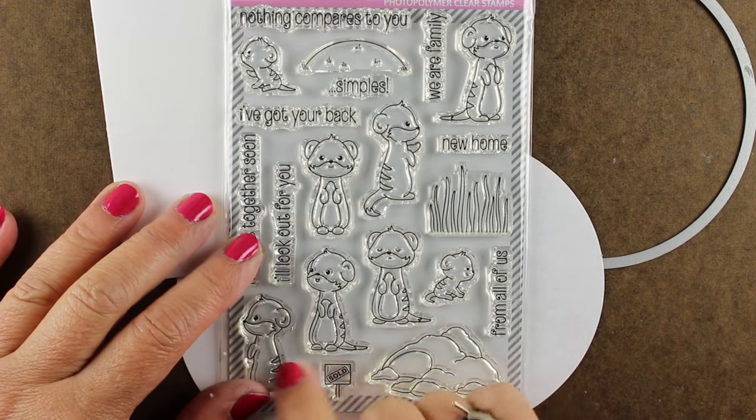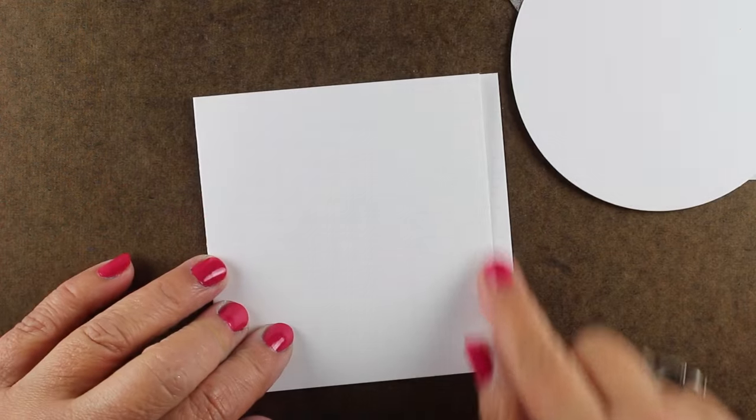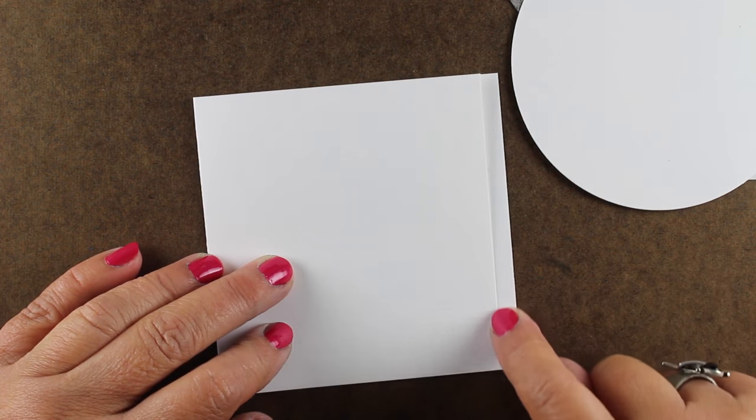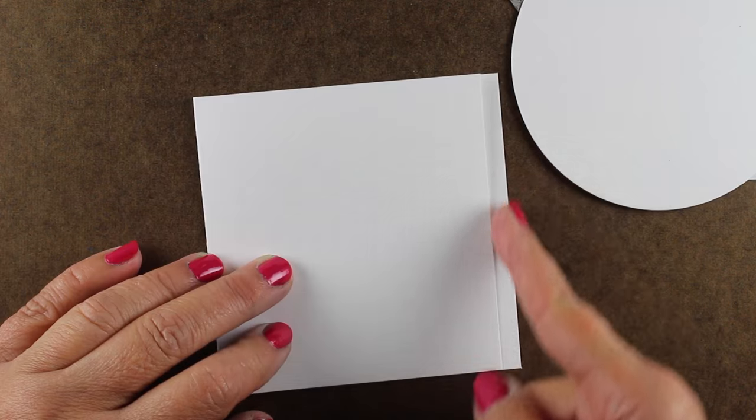I'm using this stamp set from Clearly Besotted with these darling little prairie dogs. They're so cute. I will tell you a little prairie dog story in my life in a while. My card base is four and a quarter by four and a quarter, but the front panel is cut to four inches.